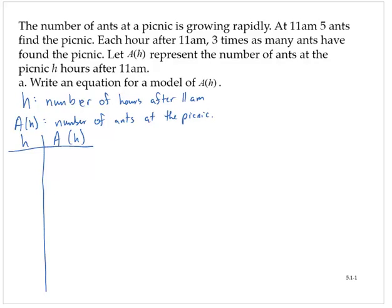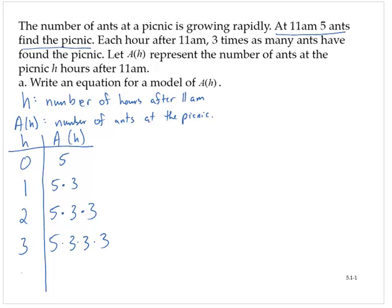Starting with the given information: at 11 AM, five ants find the picnic, so H equals zero and A of H equals five. Each hour after 11 AM, three times as many ants have found the picnic. At 12 o'clock, one hour after 11 AM, we have five times three, or 15 ants. After two hours, five times three times three, which is 45. After three hours, five times 3 times 3 times 3. And after four hours, five times 3 times 3 times 3 times 3.